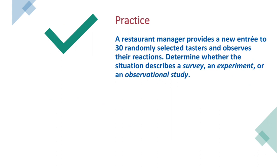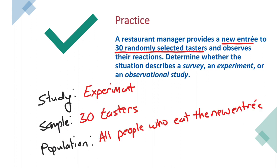Practice: tell me whether it's a survey, experiment, or observational study, then identify the sample and population. The answer is experiment, because a new entrée is being made and 30 random tasters are selected to see how it compares to other things. The sample is 30 tasters, and the population is all people who eat that new entrée — or you could say all restaurant goers as well.